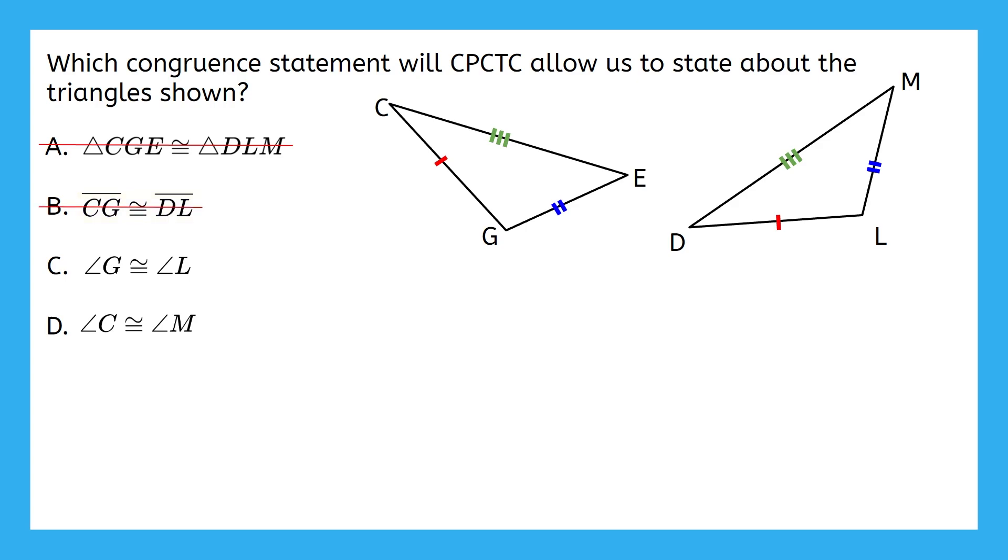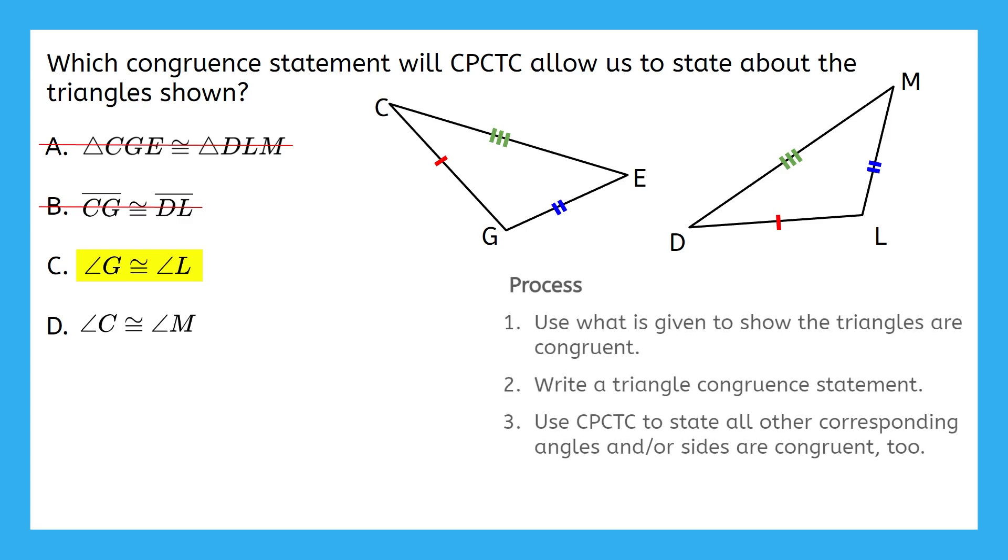Now let's talk about part C. This says that angles G and L are congruent. Well, this isn't something that was given to us in the picture. There were no congruent angle symbols in our picture at all. So, we'd have to first show that the triangles are congruent using side-side-side congruence in this case, then write a congruent statement, and then use the fact that corresponding parts of congruent triangles are congruent to state that angles G and L are indeed congruent. So, it looks like this is our answer.